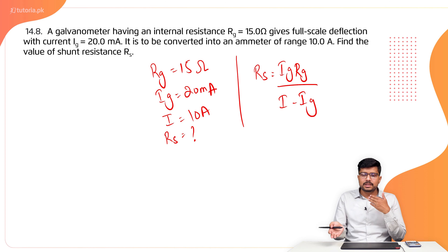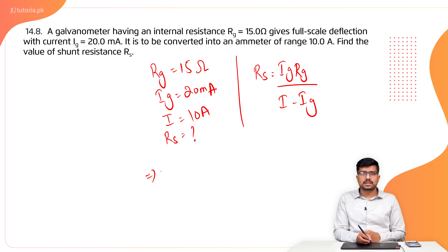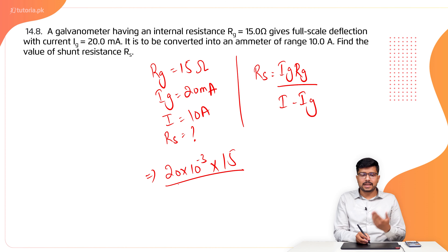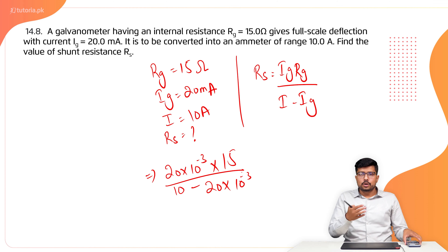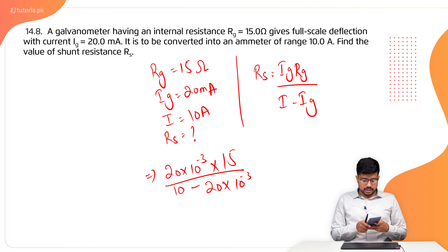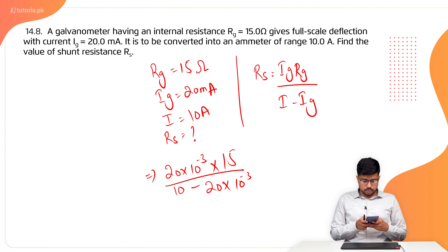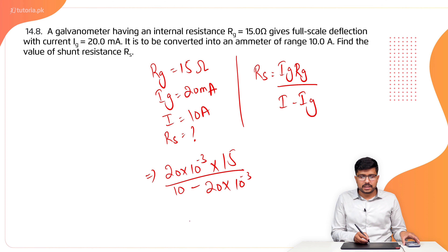Now we put in the values to find RS. The numerator is 20 milliamperes × 15 ohms, which is 20 × 10⁻³ × 15. The denominator is 10 amperes − 20 × 10⁻³. Solving this gives RS = 0.03 ohms.